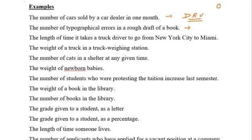Example 3: the length of time it takes a truck driver to go from New York to Miami. Since time is a continuous quantity, it could be 57 minutes 33 seconds, or 1 hour 55 minutes 2.33 seconds, or 0.003 seconds — so this is a continuous random variable.